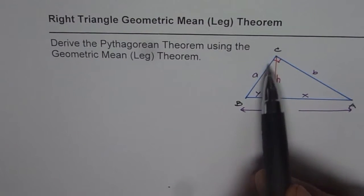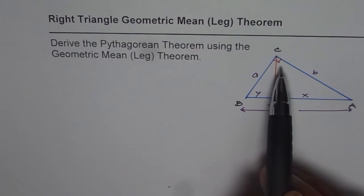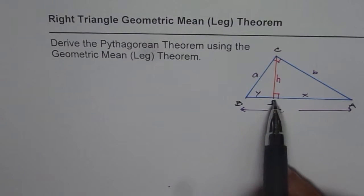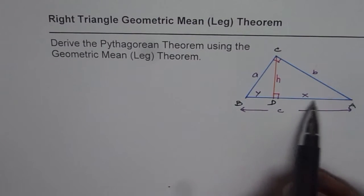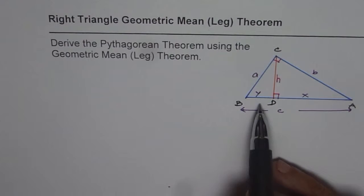So in this case we have a right triangle. We have dropped a perpendicular from C to the hypotenuse of the right triangle. It divides the line segment which is the hypotenuse into two sides X and Y. So X plus Y is C.